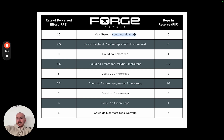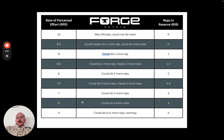An RPE 10 means max effort — you could not do a single rep more, either on weight or reps. An RPE 9 means you could do one more rep, also known as one rep in reserve. An RPE 8 means you could do two more reps, or two reps in reserve. RPE 7 is three more reps, or three reps in reserve. And RPE 6 means you could do four more reps, or four reps in reserve.